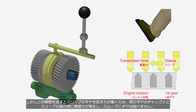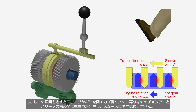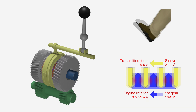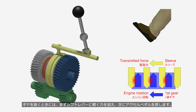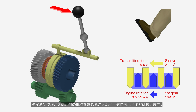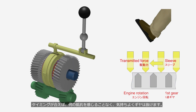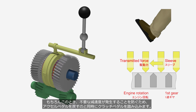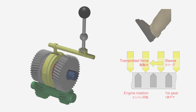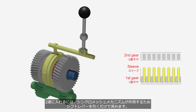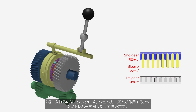However, if the driver misses this moment, the sleeve pushes the first gear, friction force is generated again, and the gear will not disengage smoothly. To summarize: when you disengage the gear, first apply light pressure to the shift lever, then release the accelerator pedal. If the timing is right, the gear will smoothly disengage without any resistance, making for a pleasant experience. To prevent unnecessary deceleration, simultaneously depress the clutch pedal while releasing the accelerator pedal. To engage second gear, the driver only pulls the shift lever, as the synchromesh mechanism comes into play.